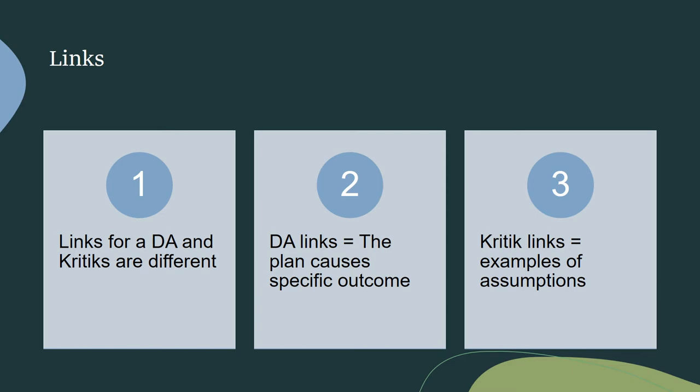Welcome back. Let's start with links. Links here are different than links on a disad. DA links are cause and effect — A equals B, B equals C, et cetera. The plan causes the change to some sort of event generally found in the uniqueness debate. X bill will pass now, but the plan causes that bill not to pass. Critique links are examples of choices that the 1AC has made — examples of assumptions the 1AC has made. We are criticizing the values of the 1AC. Our link arguments are an example of where those assumptions and choices show up in the 1AC.